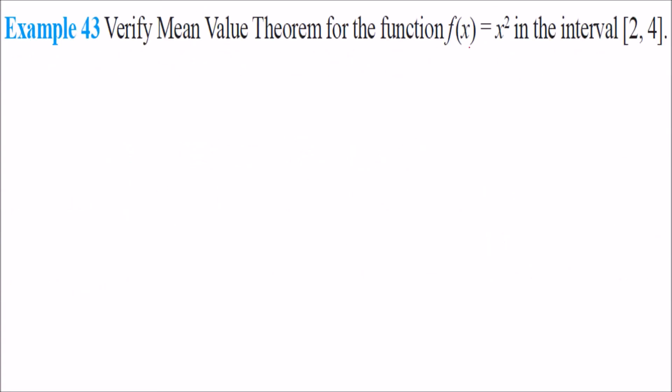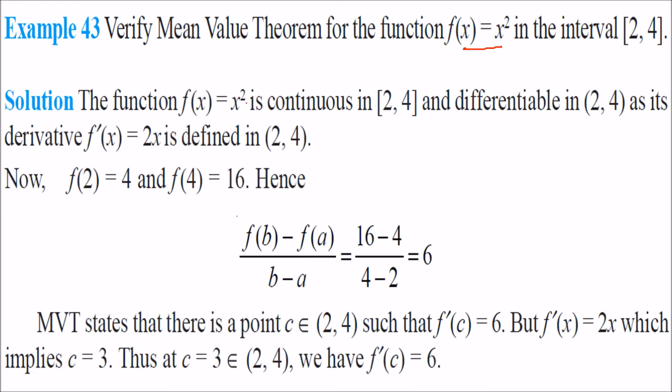Verify mean value theorem for this function in the interval [2, 4]. So this is a polynomial function. f(x) is x². This is continuous at [2, 4] and differentiable at (2, 4). And the derivative of x² is nothing but 2x. And this is defined at [2, 4].